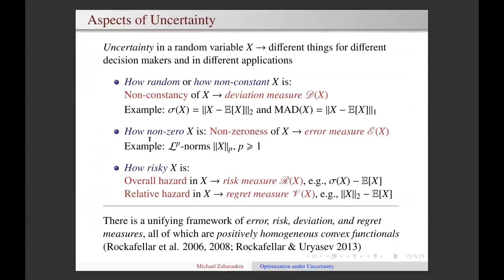For different decision makers and in different applications, uncertainty in the random variable X may mean different things. For example, one decision maker may wonder how non-constant the random variable X is. In this case, non-constancy of X can be measured by a deviation measure, like standard deviation or mean absolute deviation.